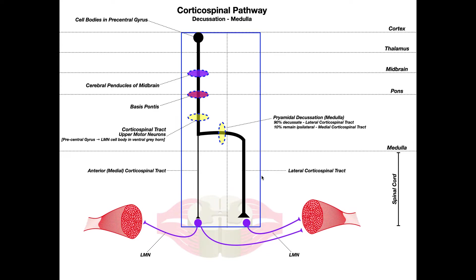The upper motor neurons of the lateral corticospinal tract ultimately have control of contralateral skeletal muscles. So in this picture, looking at an anterior view, the cell bodies on the right half of the brain are controlling skeletal muscle on the left half of the body — that's contralateral control. Whereas the anterior corticospinal tract upper motor neurons synapse with lower motor neurons that ultimately control muscles on both sides of the body, so the anterior corticospinal tract exerts bilateral control.